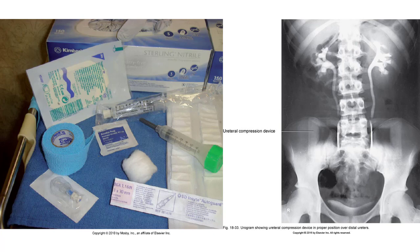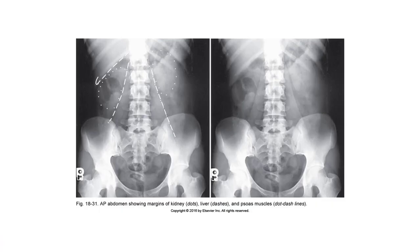Compression is contraindicated in patients with urinary stones, abdominal mass, aortic aneurysm, colostomy, suprapubic catheter, and traumatic injuries. Preliminary examination should include a Scout KUB.